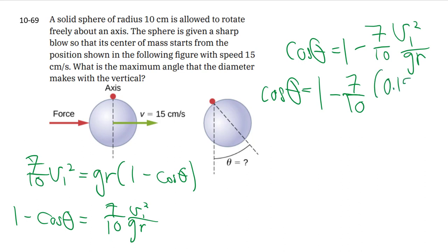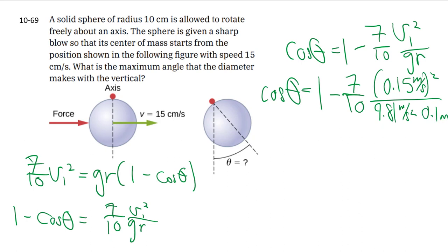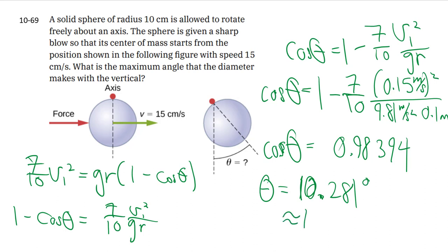My v1 is given in centimeters per second, so let's convert that to meters per second, dividing by 100. Same thing for the r: 10 centimeter becomes 0.1 meters. And then we can do the arc cosine, the cosine minus one function. Since we're looking for an angle between zero to 90 degrees, we don't have to worry about quadrant stuff, resulting in an angle of 10 degrees.